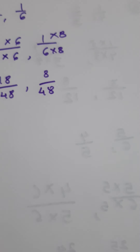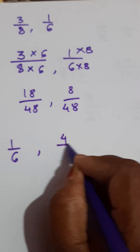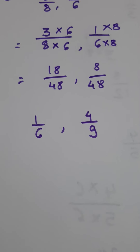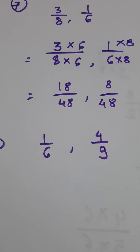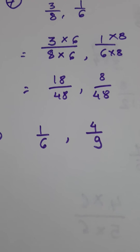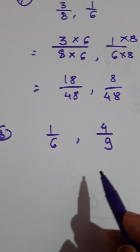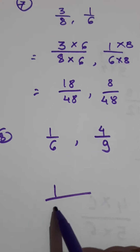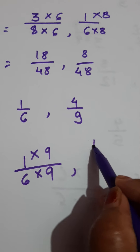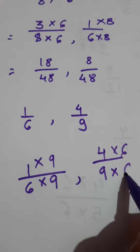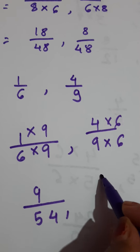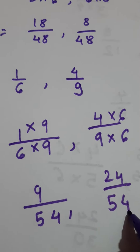See the next and last example: 1 upon 6 and 4 upon 9. Here also, use the same method to get like fractions. There is one more method using LCM, but that is not for this standard — from 6th grade onwards you will learn how to make them equal by finding the LCM. But for this standard, I am teaching the simple method. Multiply the first fraction by the second denominator and multiply the second fraction by the first denominator. So: 9 ones are 9, 6 nines are 54, 4 sixes are 24, and 9 sixes are 54. Got the like fractions!